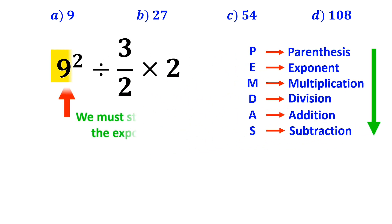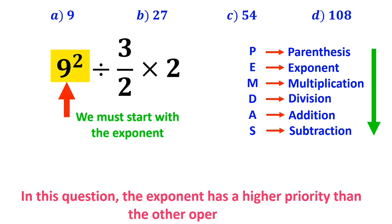First, we must start with the exponent, because in this question, the exponent has a higher priority than the other operations. So, instead of this expression, we can write 81 divided by 3 over 2 multiplied by 2.